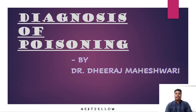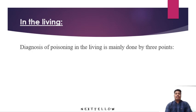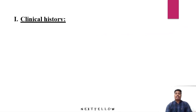Today we will discuss the diagnosis of poisoning. It can be diagnosed in the living or in the dead. Diagnosis of poisoning in the living is mainly done by three points: the first is clinical history, the second is clinical signs, and the third is lab investigations. We will discuss each of them separately.